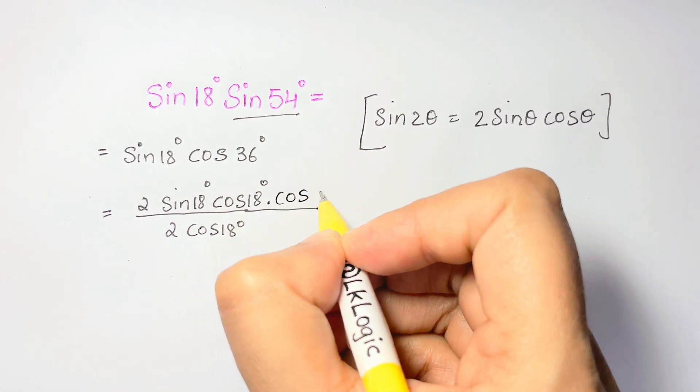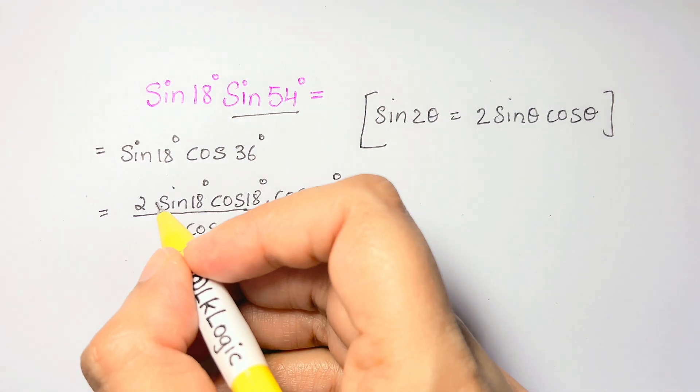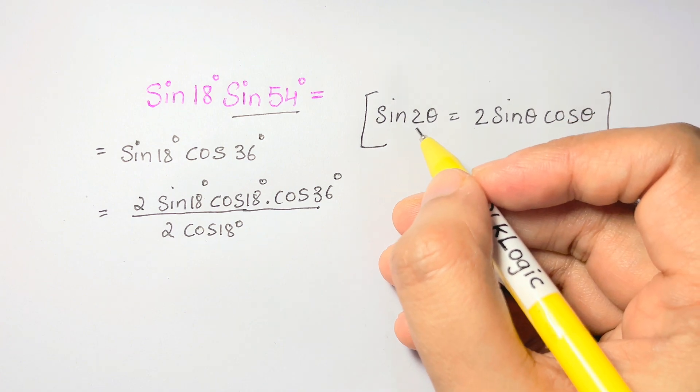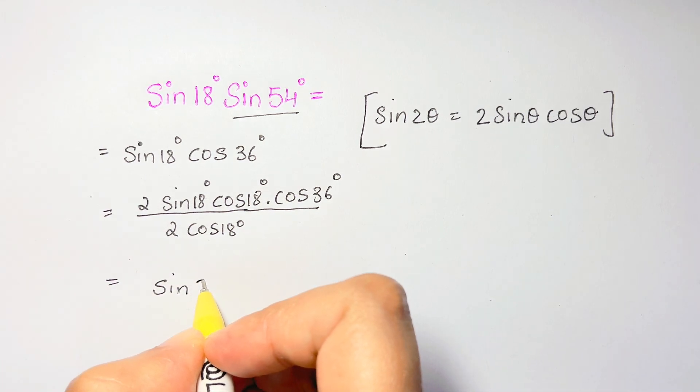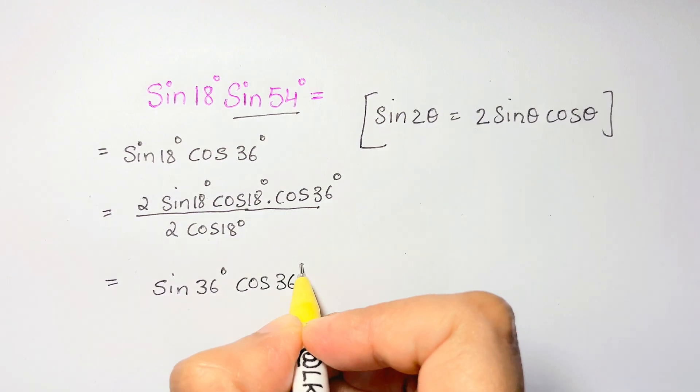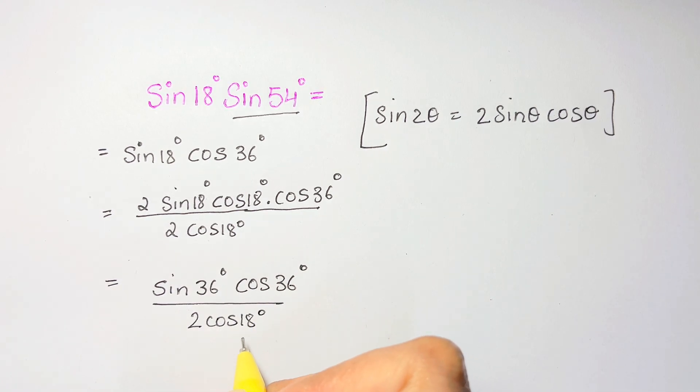Now let's multiply by cos 36 degrees. So we are going to use the double angle formula here for 2 sine 18 degrees cos 18 degrees. 2 sine theta cos theta equals sine 2 theta. So we are going to take double of 18 degrees. That's 36. So you have sine 36 degrees cos 36 degrees over 2 cos 18 degrees.